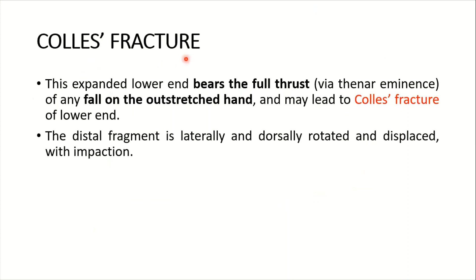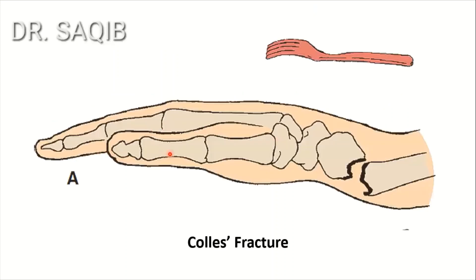Regarding applied anatomy, I will cover fractures in a separate video. However, Colles' fracture is very important and must be mentioned with the radius. This expanded lower end bears the full thrust via the thenar eminence in a fall on the outstretched hand, leading mainly to Colles' fracture of the lower end. The distal fragment is laterally and dorsally rotated and displaced with impaction. Here you can see the fracture displacement, and there is also a characteristic dinner fork deformity.